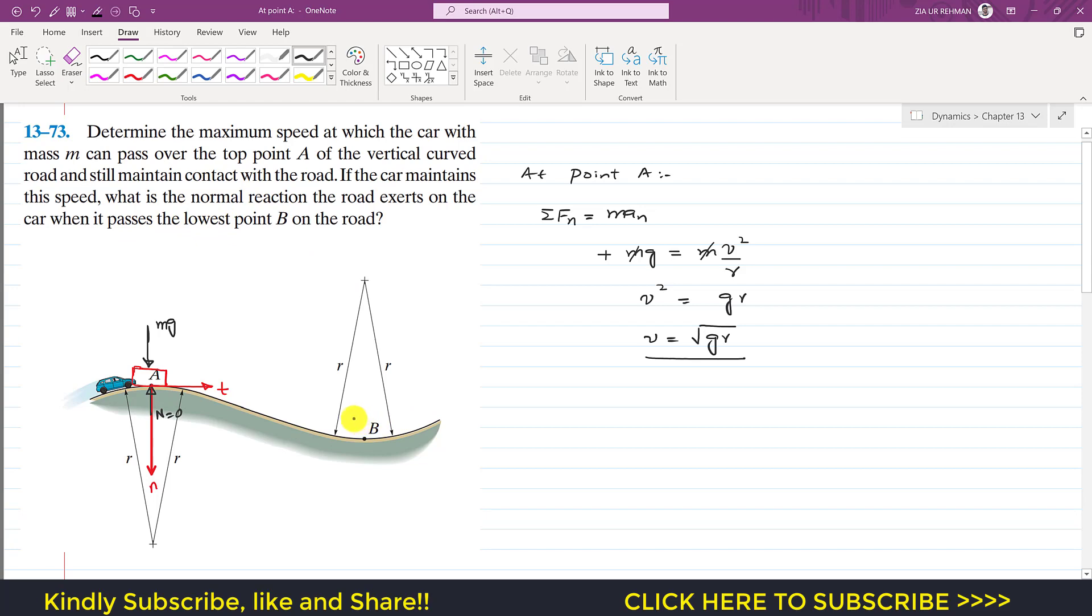So at point B, if the car is here, and if it is in contact with the surface, then we will have that normal force which will be acting vertically upward, and its weight will be acting vertically downward. And this will be again our tangential direction, and the normal direction will be towards the center of the curvature.